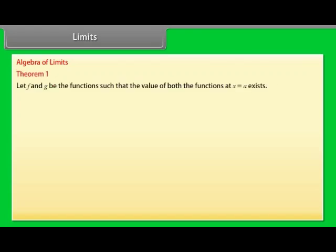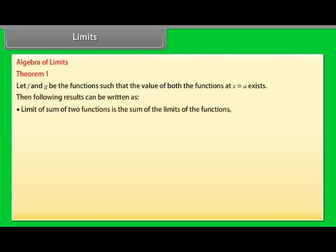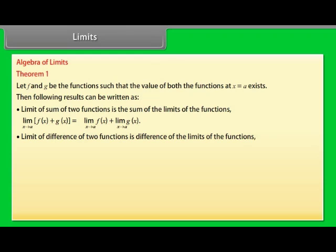Algebra of Limits — Theorem 1: Let f and g be functions such that the value of both functions at x=a exists. The limit of the sum of two functions is the sum of the limits: lim(x→a) [f(x)+g(x)] = lim(x→a) f(x) + lim(x→a) g(x). The limit of the difference of two functions is the difference of the limits: lim(x→a) [f(x)−g(x)] = lim(x→a) f(x) − lim(x→a) g(x).